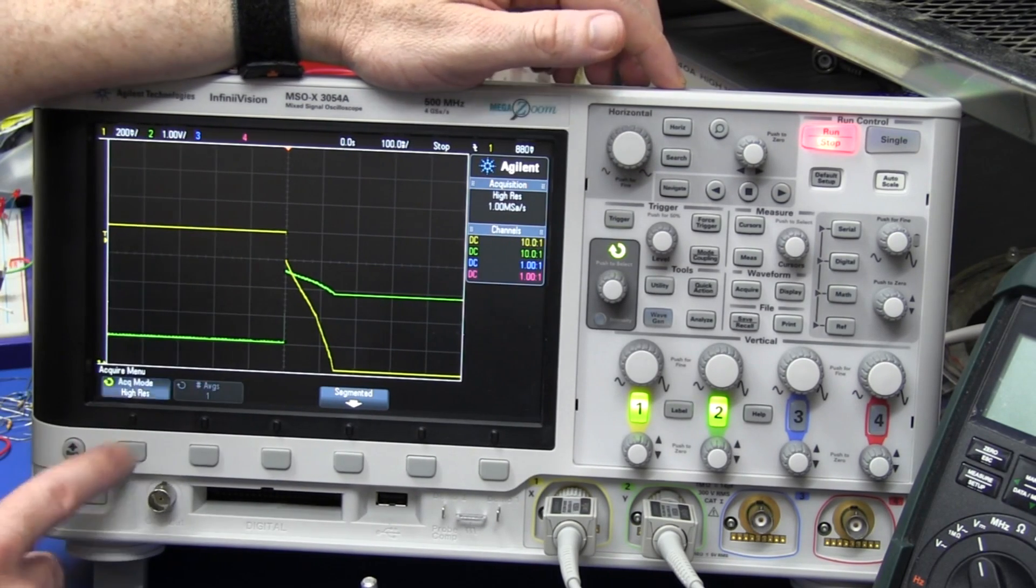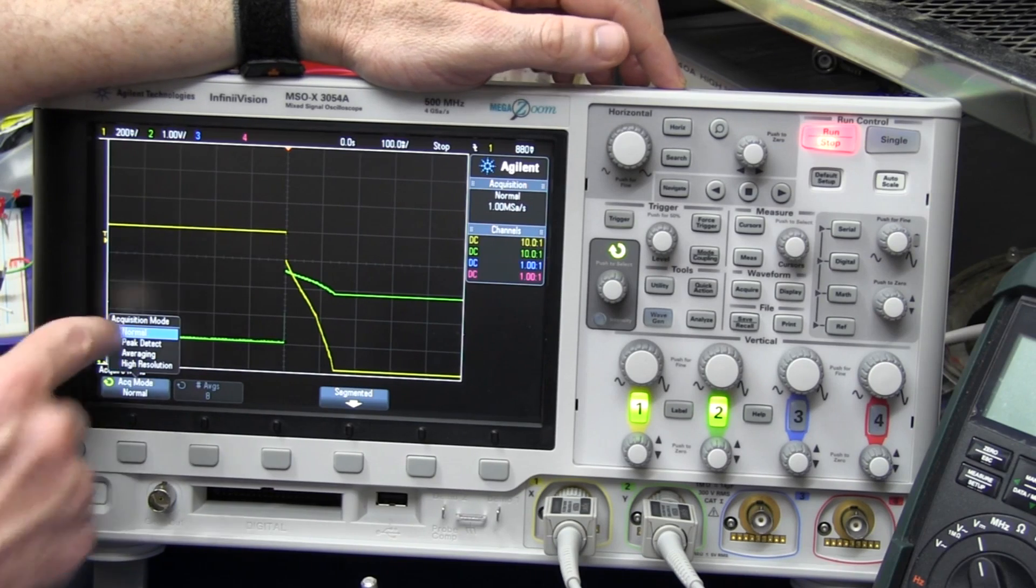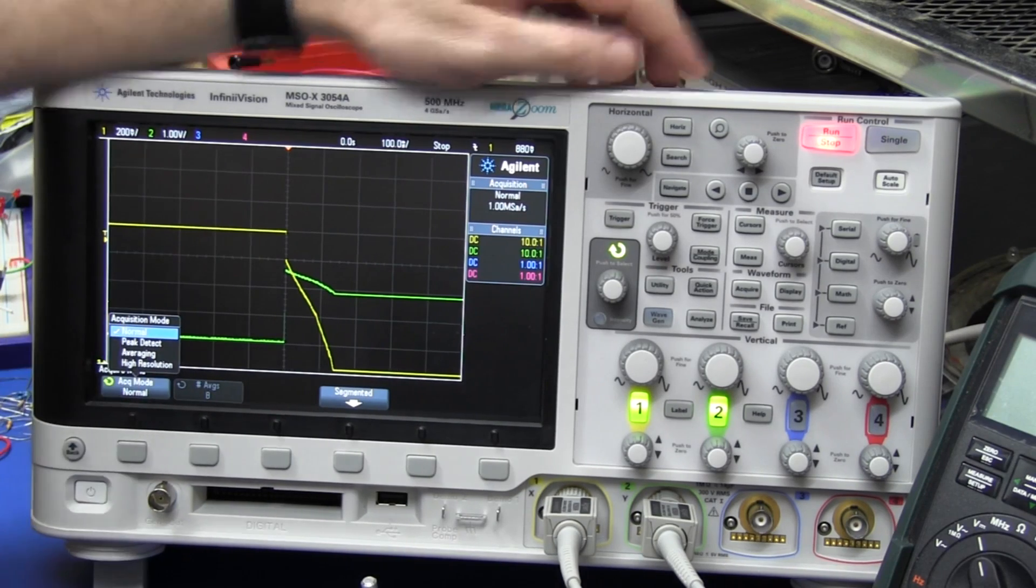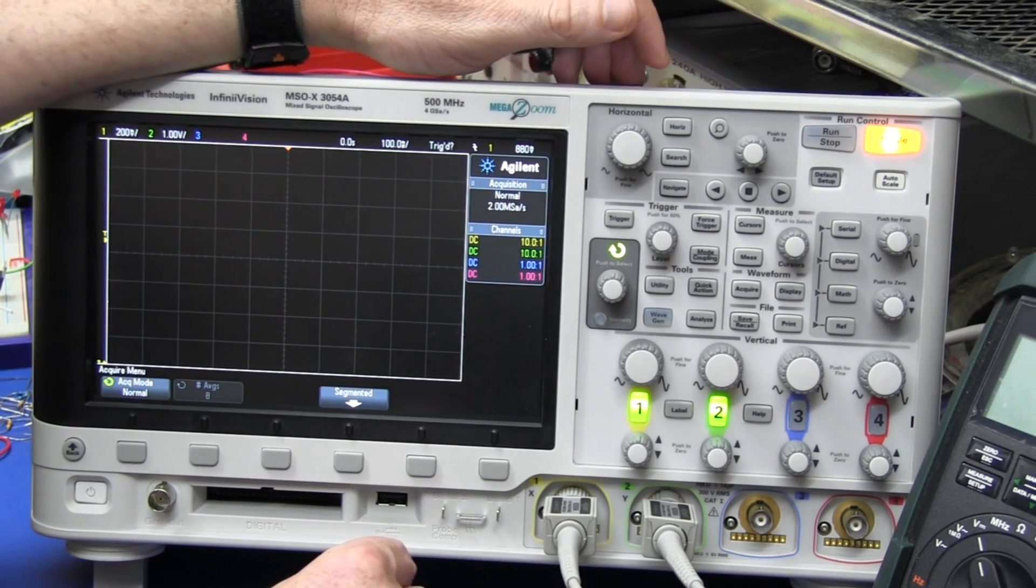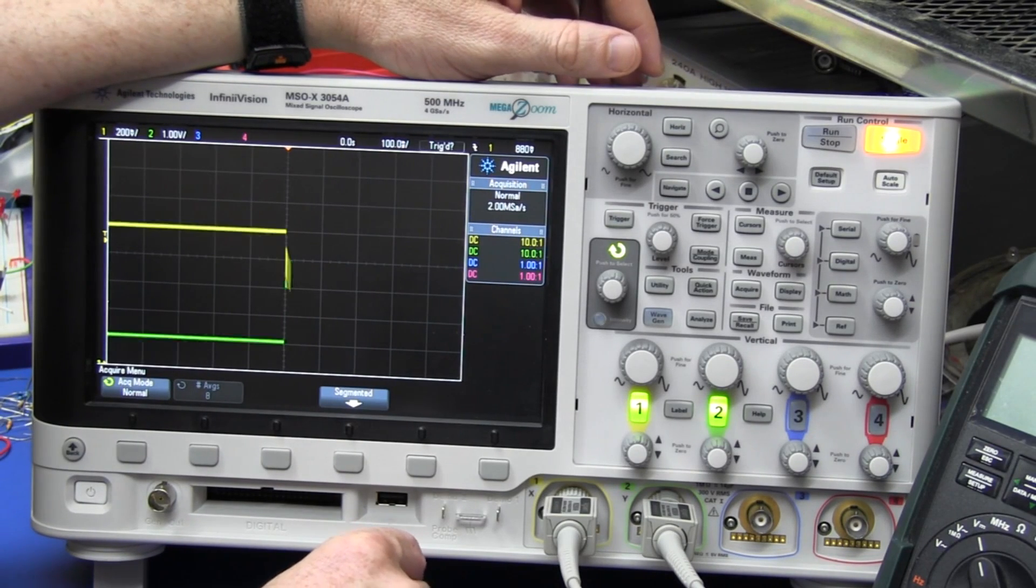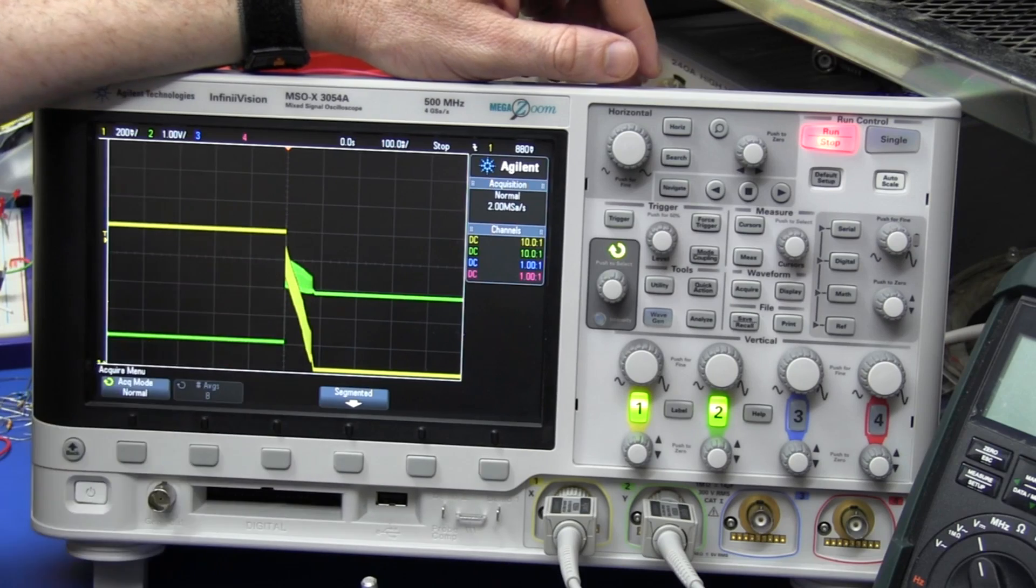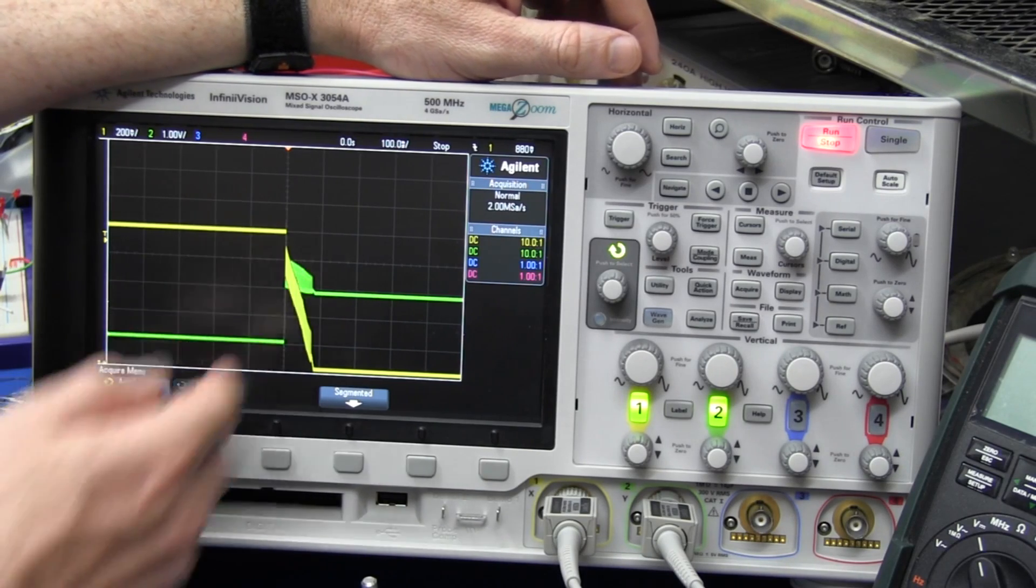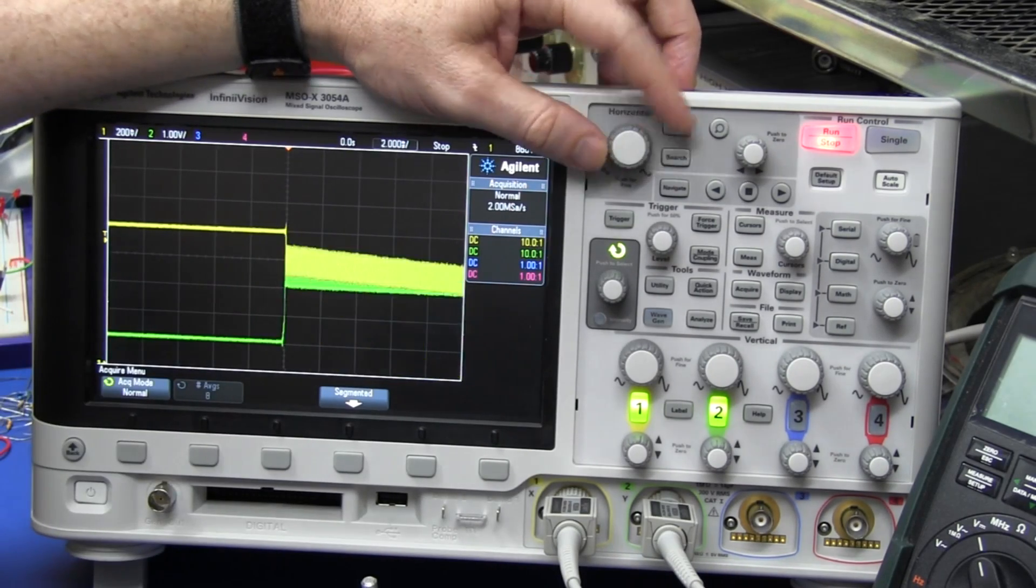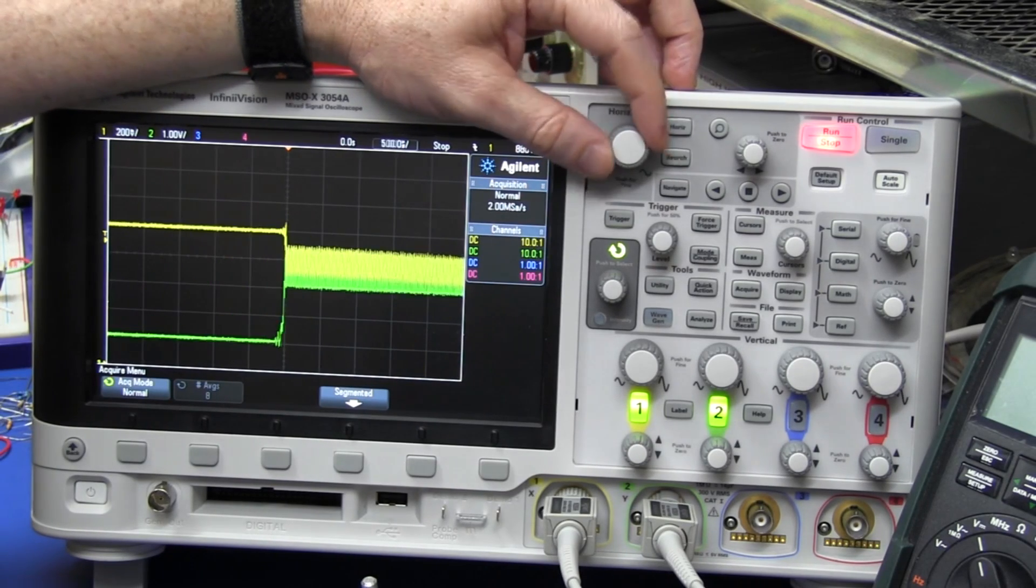It looks smooth as a baby's butt. But if you turn off high res mode and you go into normal mode, let's capture that same signal again. And bang, you can see the noise at the slowest time base, and it's exactly the same when you zoom in.